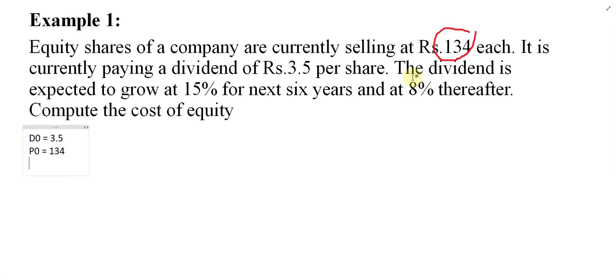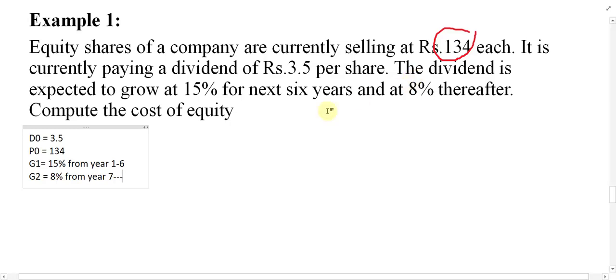We also have two growth rates. G1 = 15%, which applies from year one up to year six. And G2 = 8%, which applies from year seven onwards. Nothing else is given in the question. So we have D0, P0, G1, and G2 — the rest we have to find.